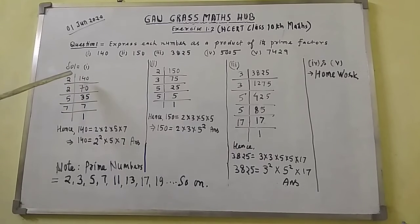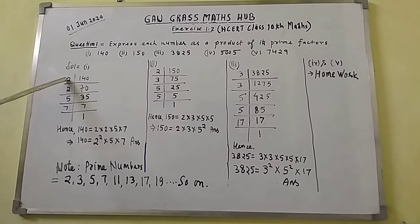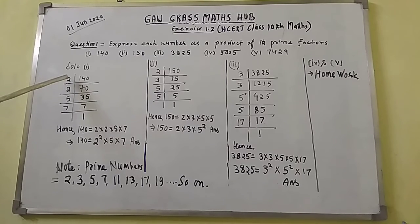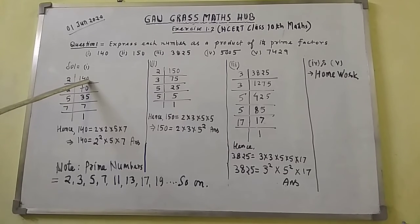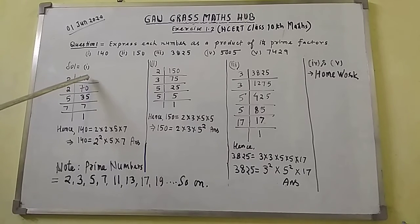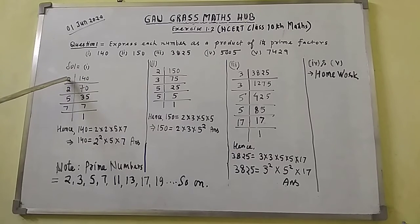Here, put the lowest prime number, which is 2. Since we know that 1 is neither prime nor composite, the least prime number is 2. You can see that the digit at the unit place of 140 is 0, which means 140 can be divided by 2.